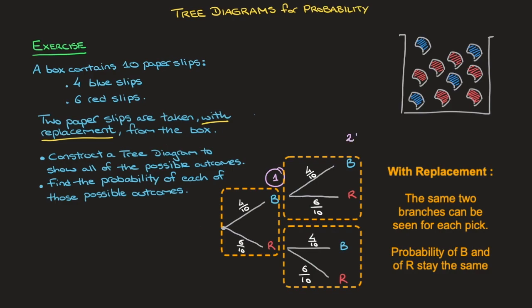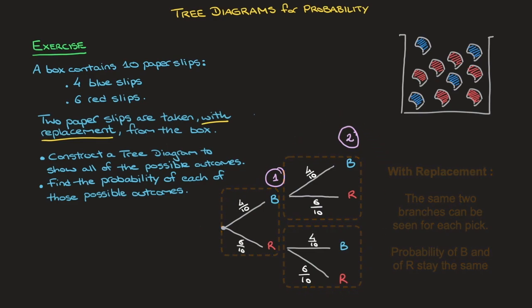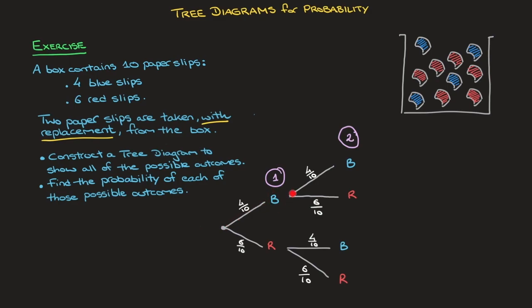Now that we've taken care of the second paper slip, we can say we've drawn the tree diagram for this experiment. A good habit when drawing tree diagrams is to write all of the possible outcomes on the right hand side — that's also what was asked in the question. Starting from the beginning of the tree diagram, we're going to walk down each of the four possible paths, making a note of each of the outcomes we come across. The combination of those will make up the different outcomes of the experiment.